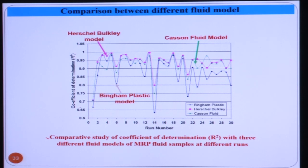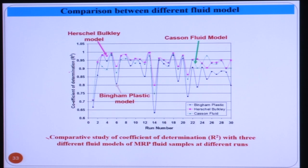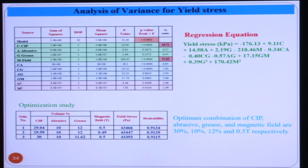From the ANOVA study, magnetic field has the highest contribution to yield stress at 57.65 percent, followed by CIP particles at 10.71 percent, while abrasive and grease have much less contribution.